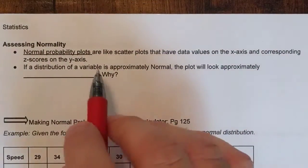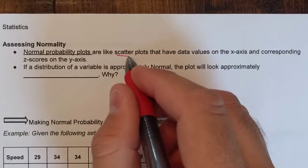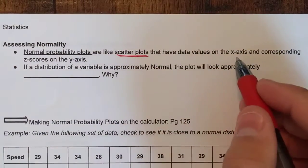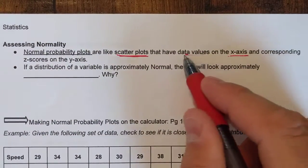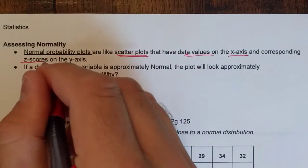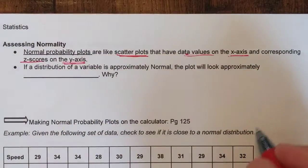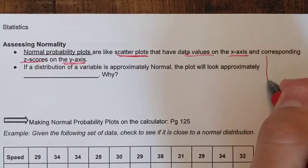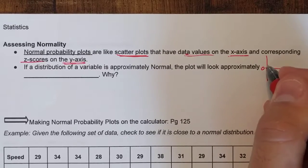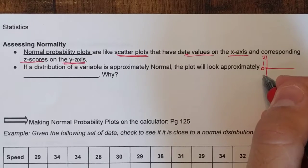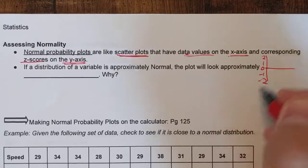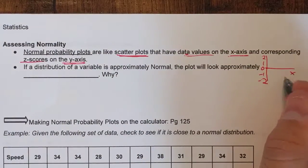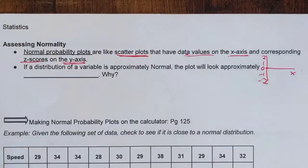So normal probability plots are like scatter plots. You'll see a bunch of data scattered and they're going to have data values on the x-axis, the raw scores, and then the corresponding z-scores will be on the y-axis. So you'll see z-score of zero, the positive z-scores up here, the negative z-scores on the y-axis, and then your x data, whatever it is, across the x-axis.